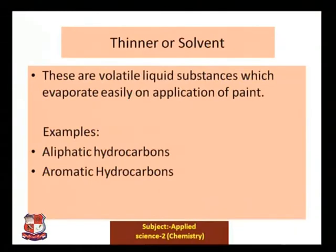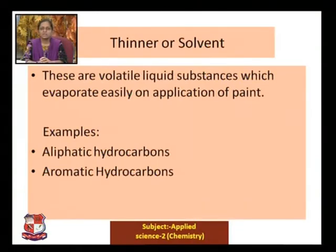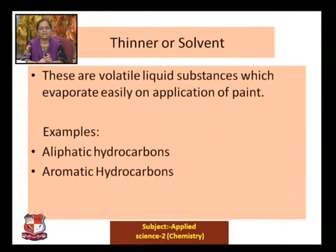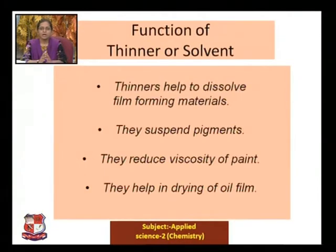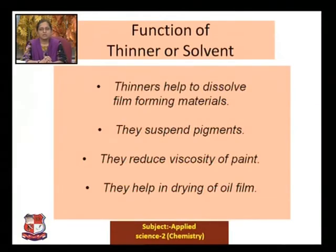Another important component is the thinner or solvent. Thinners and solvents are volatile liquid substances which evaporate easily on application of paint. When you apply paint on a surface, the thinner or solvent evaporates and the final solid film remains. Aliphatic or aromatic hydrocarbons typically serve this role. The thinner helps dissolve film-forming materials in the paint.